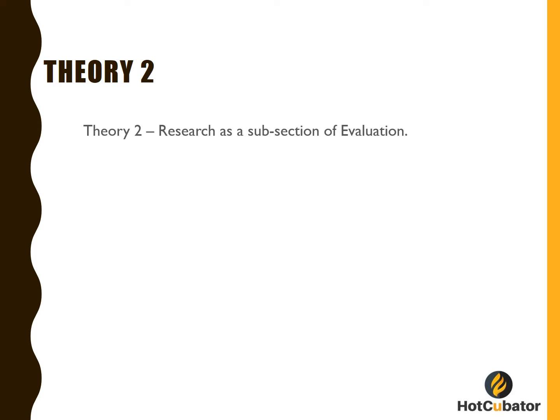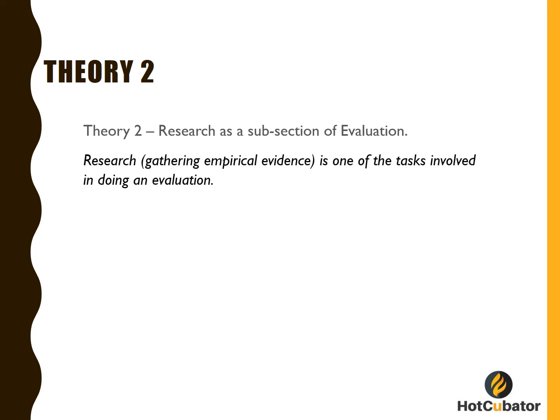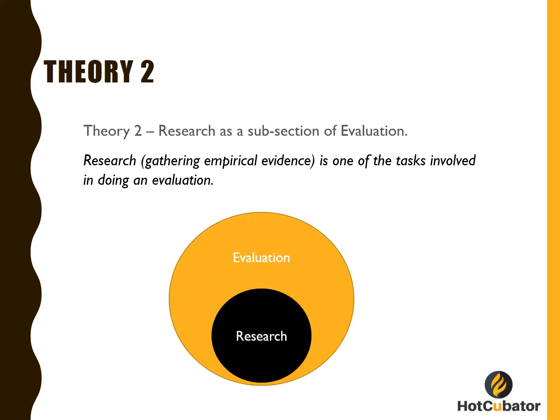School of thought two is premised on the belief that research is a subsection of evaluation. This is based on the belief that research, which is gathering empirical evidence, is one of the tasks involved in doing an evaluation. In every evaluation, research is ingrained within it, and the proponents of this theory believe that research is merely a function of the broader paradigm of evaluation.